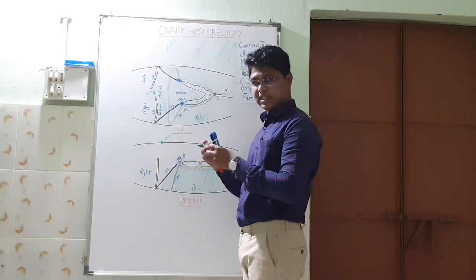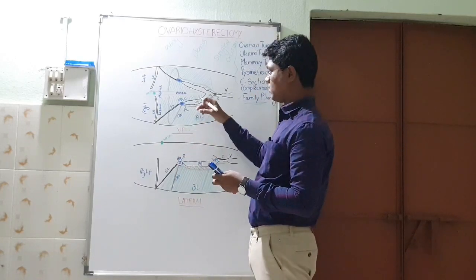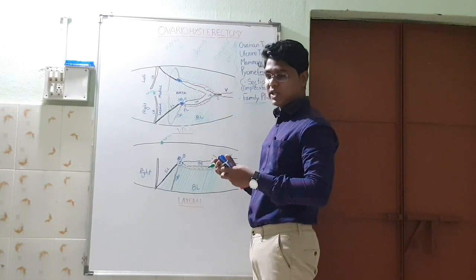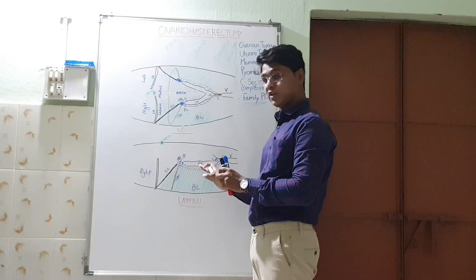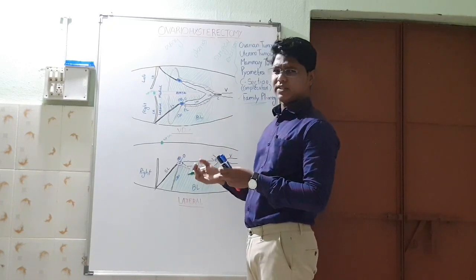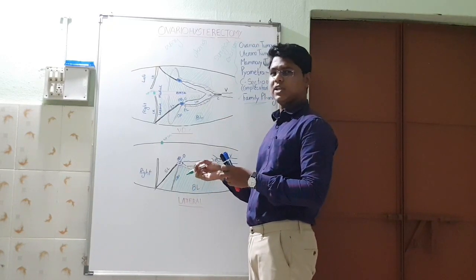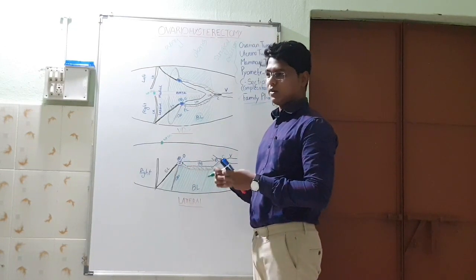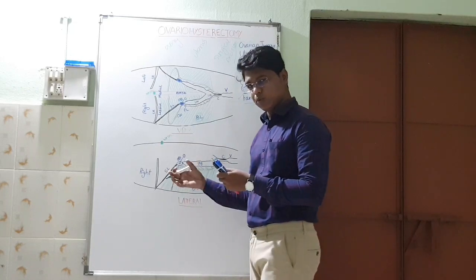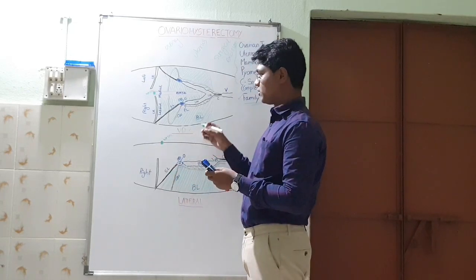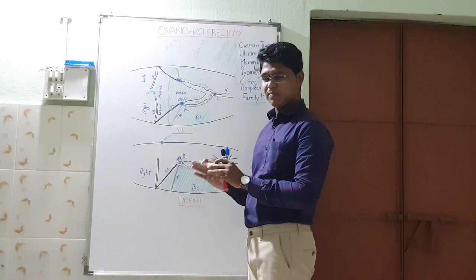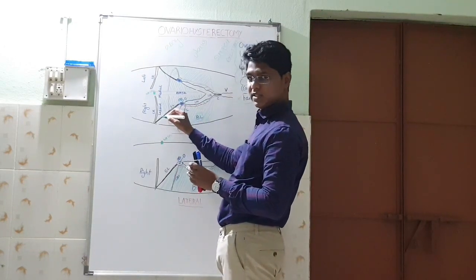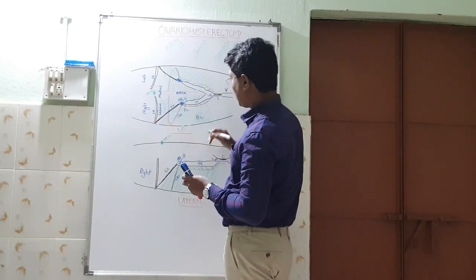If you pull the suspensory ligament without rupturing it, the animal will react. In field conditions, achieving a deep surgical plane is really difficult because we do not have major diagnostic equipment. So we generally prefer a light surgical plane — that is why we need to rupture this suspensory ligament.